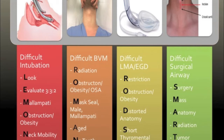Moving on to difficult BVM predictors, we use the memory aid ROLLMAN. Radiation to the head and neck causes anatomical abnormalities and narrowing of the airway. Obesity, OSA, and obstruction lead to a crowded oropharynx that will result in difficult airflow. Difficulties in getting a mask seal, especially in males with a beard, can cause ineffective bag valve mask ventilation. Advanced age causes difficulty with getting a mask seal, and if the patient has no teeth, this will make it difficult to prevent a mask leak.